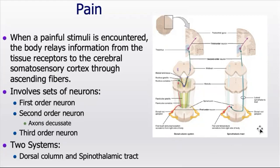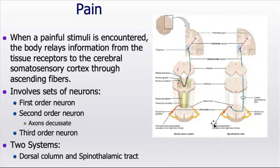Clinically, if someone has difficulty sensing temperature — let's say they touch a hot or cold surface and can't tell the temperature — we're likely having trouble in the spinal thalamic tract. In that case, their fine touch and proprioception might be totally intact because that takes a totally different path to the brain. Think of it like two different highways — the 401 and the 407 — two different pathways to the same destination: the somatosensory cortex.